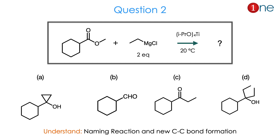Question number 2. The starting material is a cyclic system in its acidic form with an ester attachment and a methyl group at the end. You have ethylmagnesium chloride and you are using titanium isopropoxide at low temperature. There are 4 possible products: cyclopropane ring formation, oxidation, new carbon addition, or continued addition of the carbonyl carbon. From the reagents and starting material, you might guess a named reaction is involved and a new C-C bond is definitely formed. The answer is A.